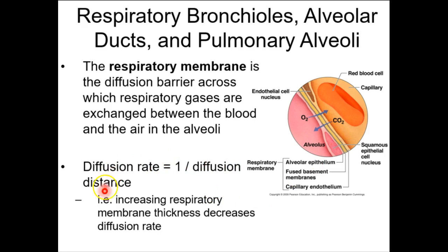Diffusion rate is inversely related to diffusion distance. If you don't like the mathematical concept, all it means is the farther you have to go, the slower you're going to get there. So if the respiratory membrane was thickened — maybe you have some mucus or inflammation increasing its size — diffusion rate would be slower. It would decrease.